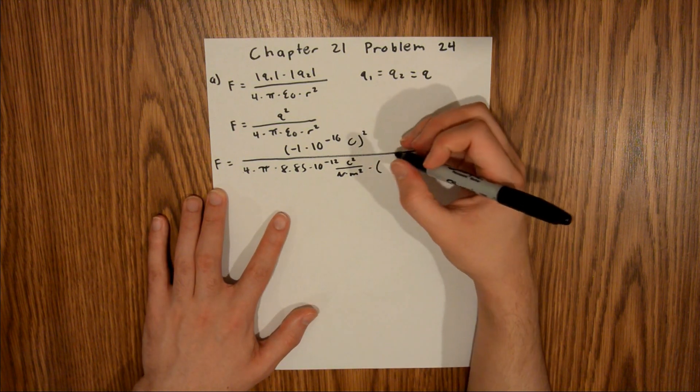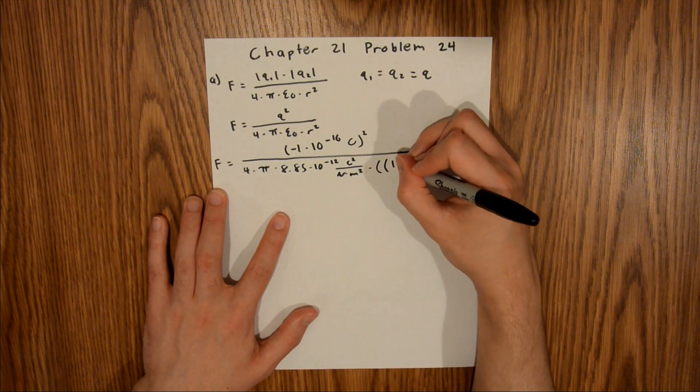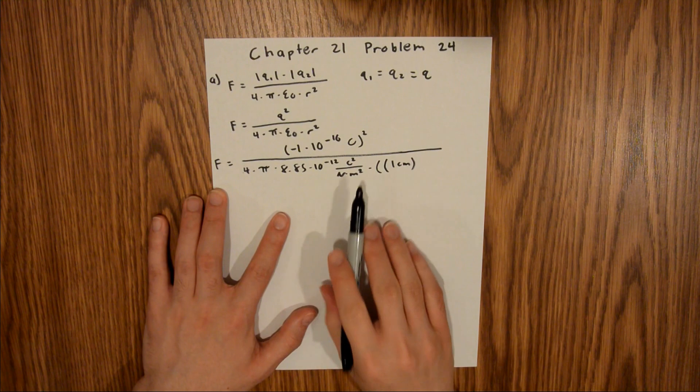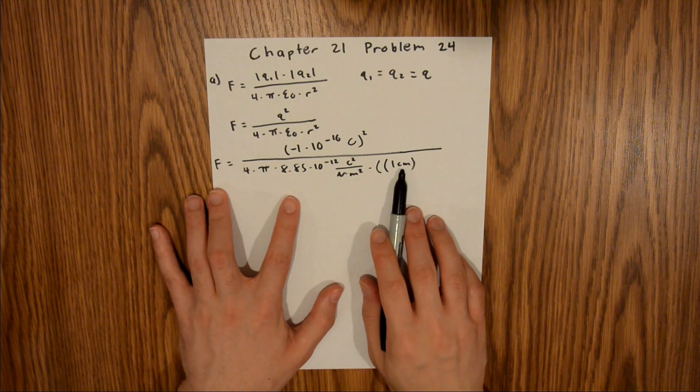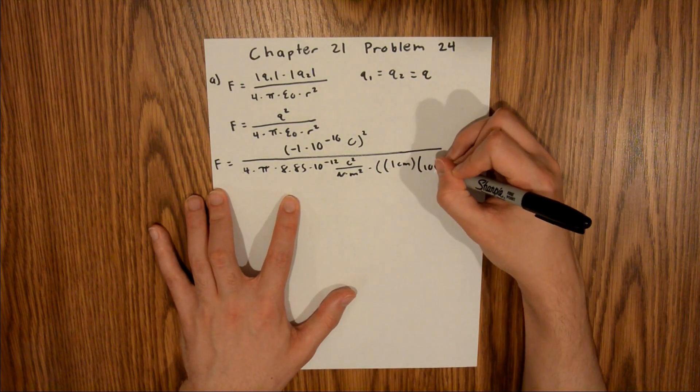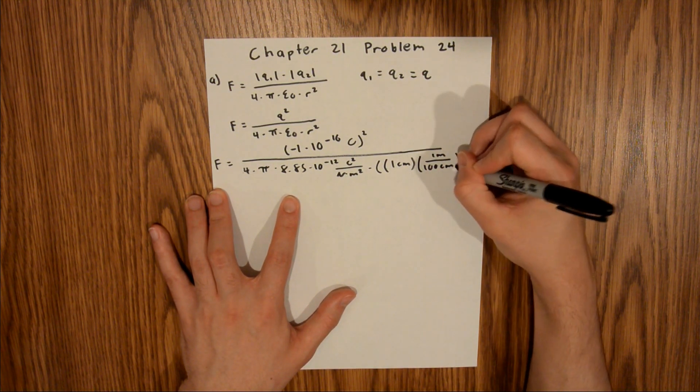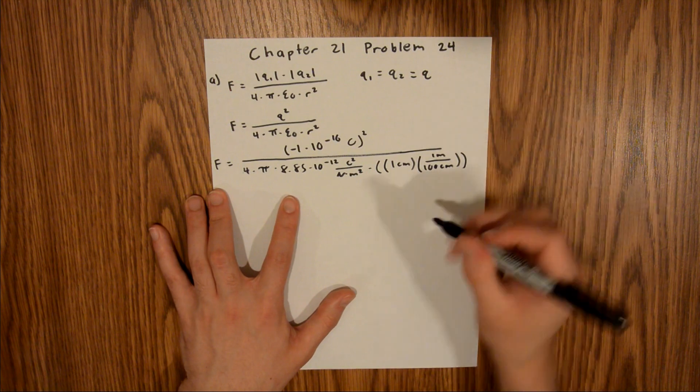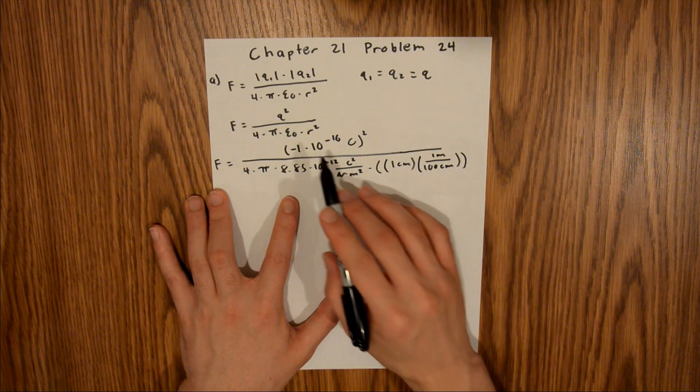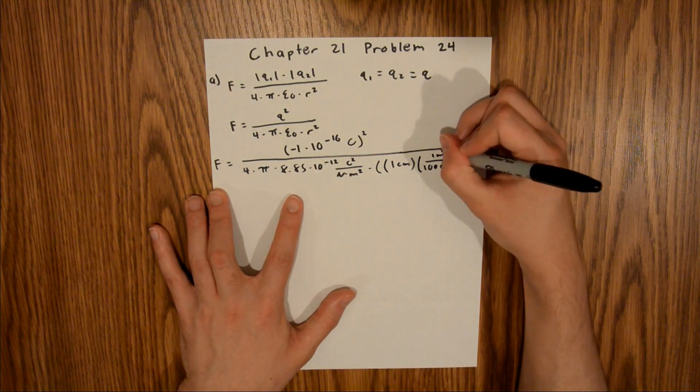Our radius, we are told, is one centimeter, but as you see right here we have meters, so we need to convert this to meters. That'll be 100 centimeters in one meter. That is our entire term for the radius, and our radius is squared, so we're going to square that entire term.